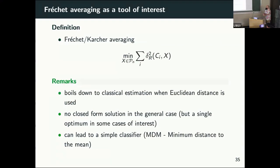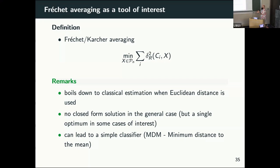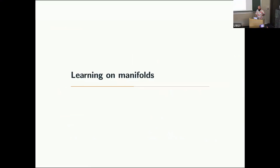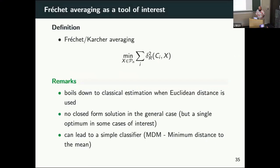Let's stop on a particular problem I like: the Fréchet or Karcher mean. Basically you're looking for a point X that is close to all the observed points — you compute the squared Riemannian distance from each observation c_i to some point X and find the X that is closest on average to all your points on the manifold. If you use the Euclidean distance, this boils down to the classical average estimator. On interesting curved spaces there is no closed form solution, but you can solve it as an optimization problem and find a simple classifier from that.